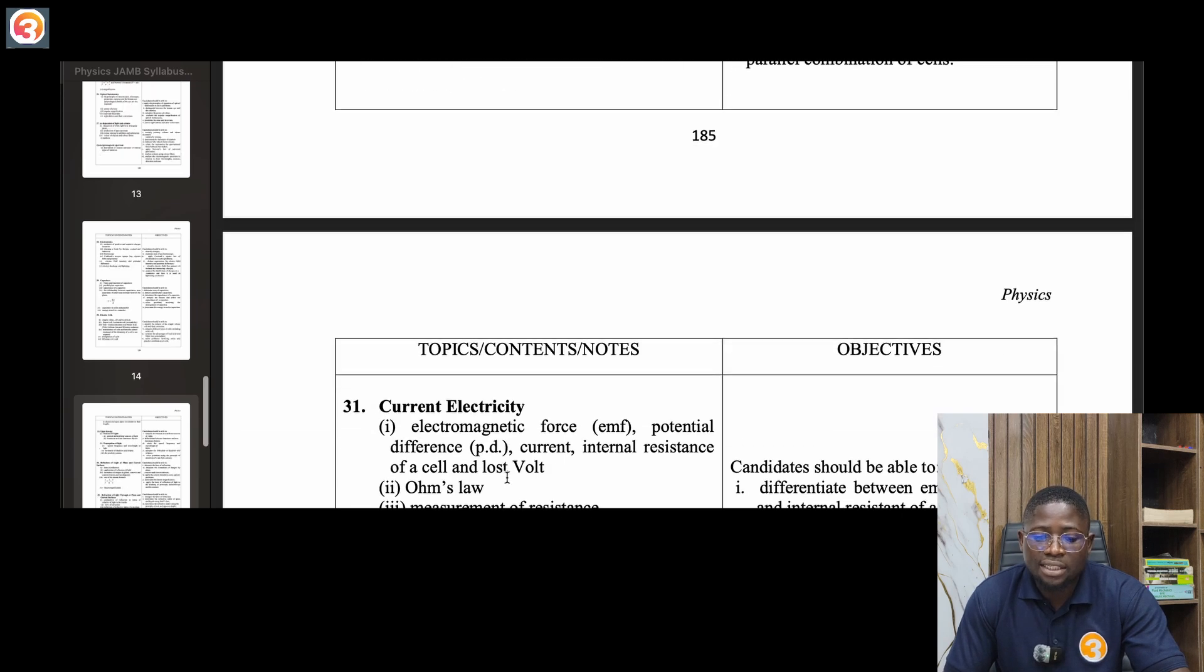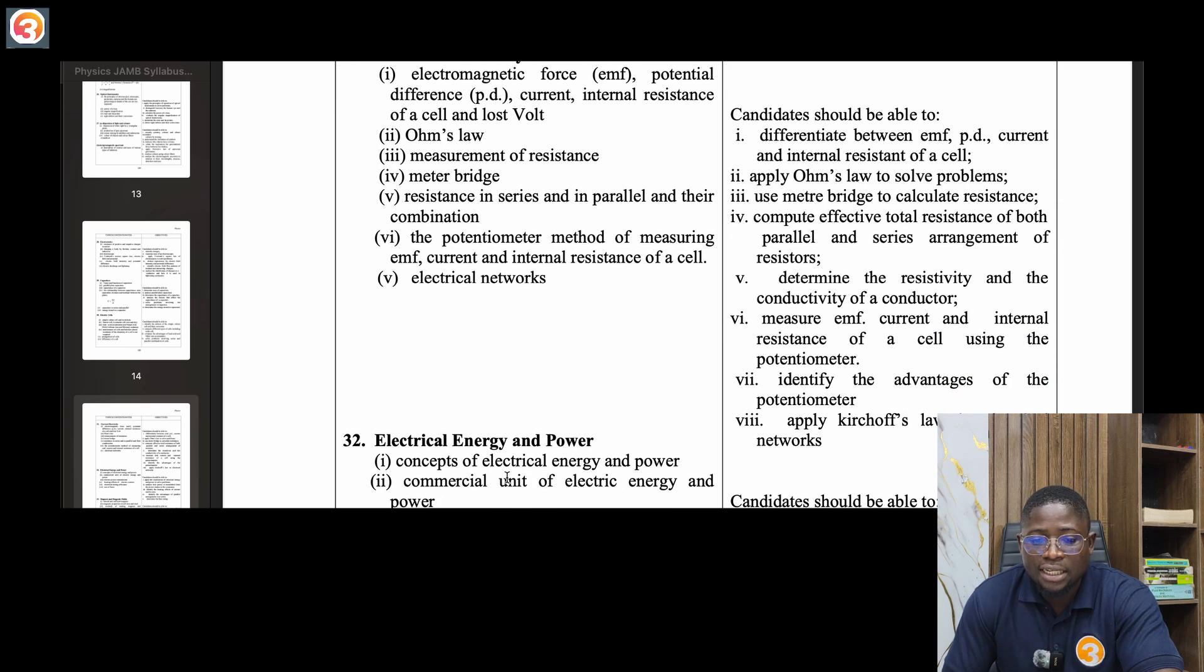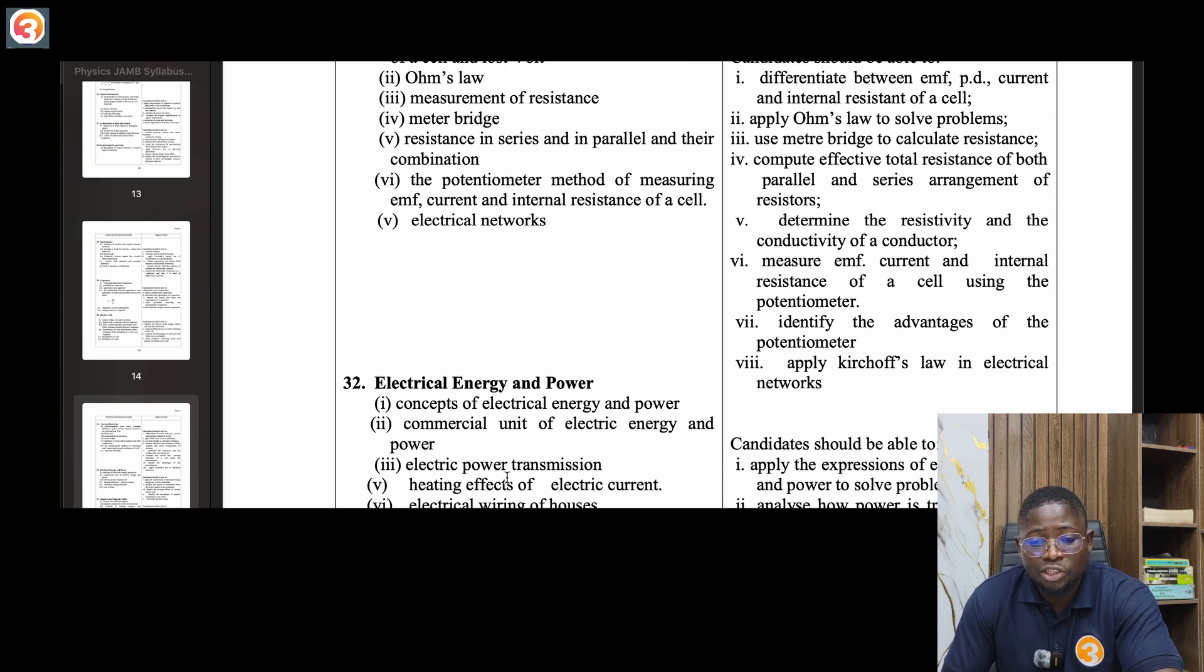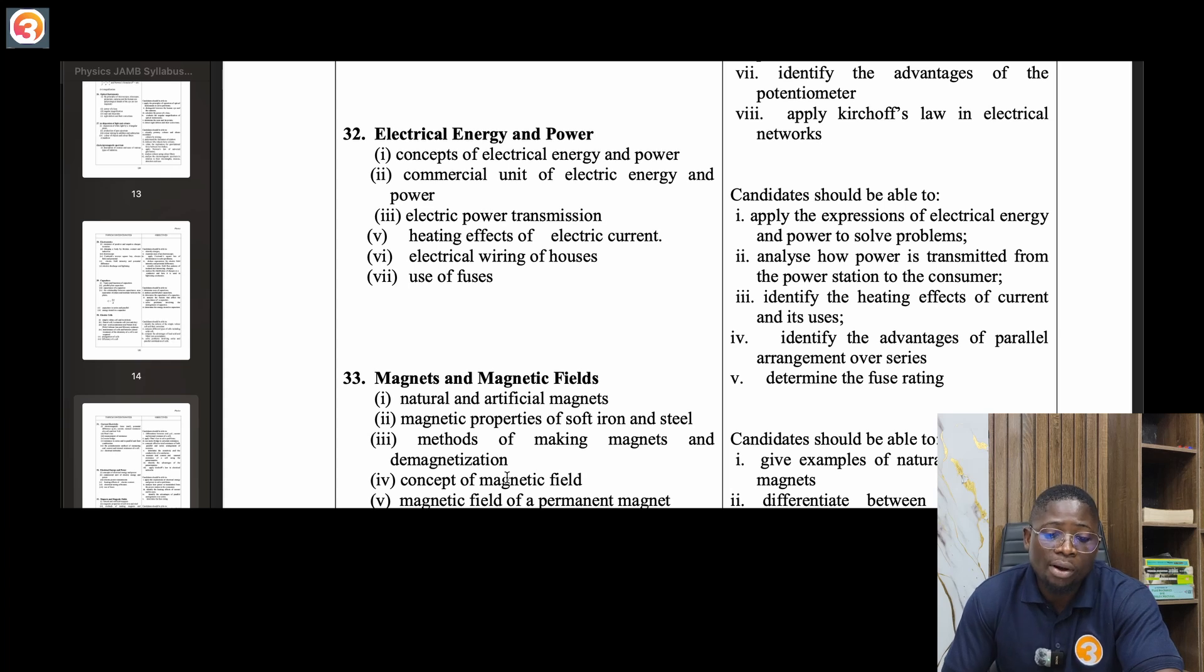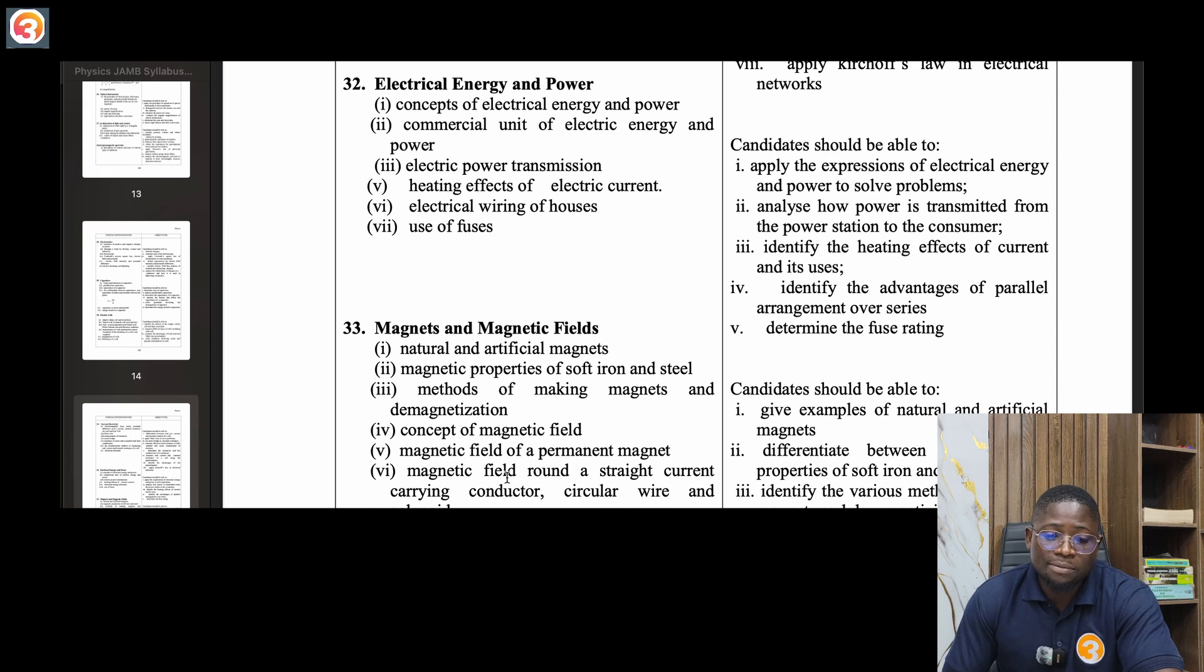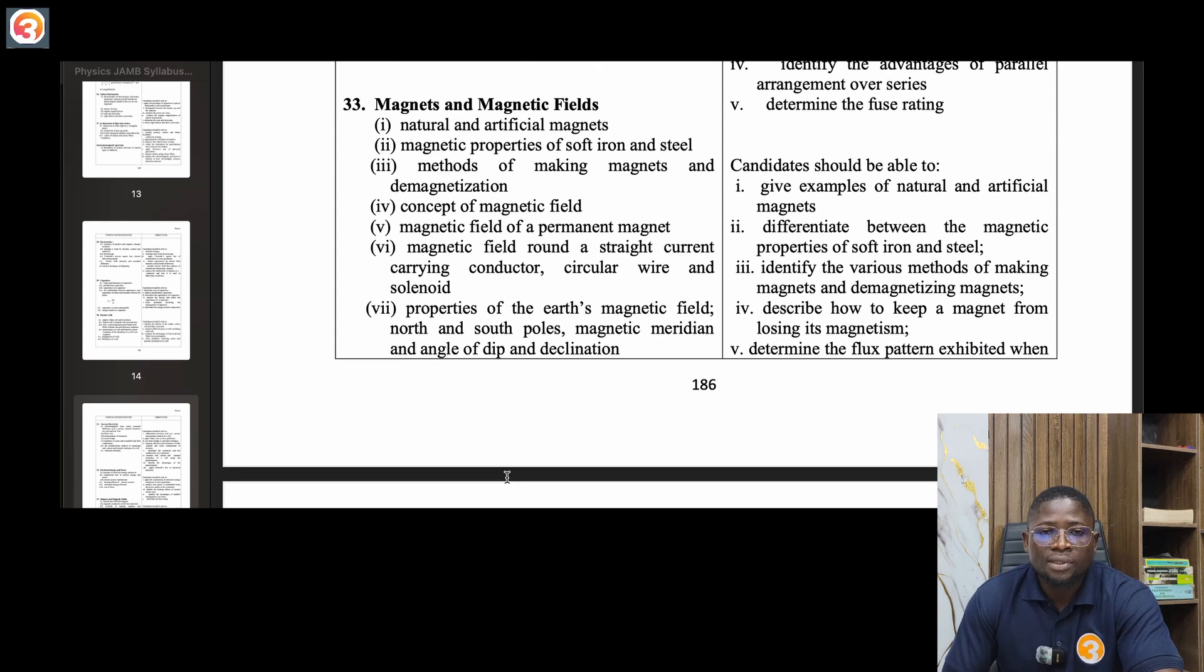Thirty-one, current electricity. Electromotive force EMF, potential difference PD, current, internal resistance of a cell and lost volts, Ohm's law, measurement of resistance, meter bridge, resistance in series and parallel and their combination, the potentiometer method of measuring EMF, current and internal resistance of a cell, electrical networks. Thirty-two, electrical energy and power. Concept of electrical energy and power, commercial unit of electrical energy and power, electric power transmission, heating effect of electric current, electrical wiring of houses, uses of fuses.